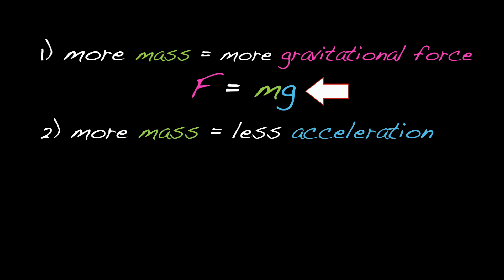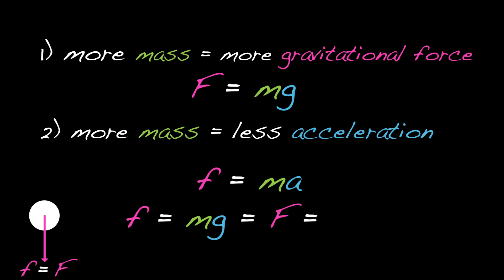So we have two equations. Newton's second law, little f is equal to ma, where little f is the net force, and Newton's law of gravity, where big F is equal to mg. For a particle being acted on by only gravity, the net force, little f, is big F. Little f is equal to mg is equal to big F is equal to ma.